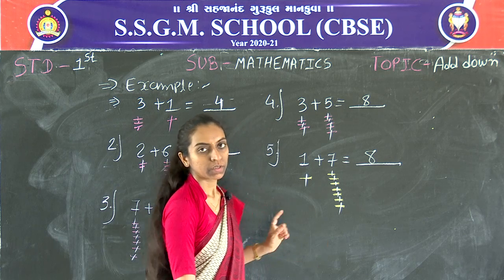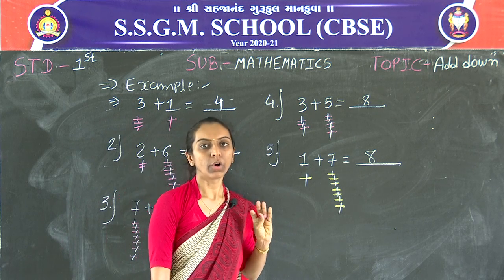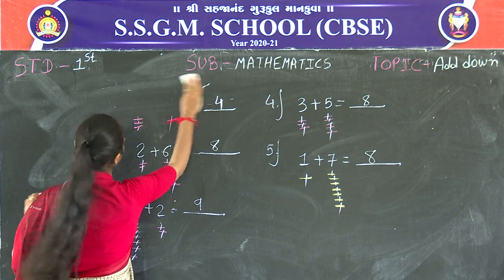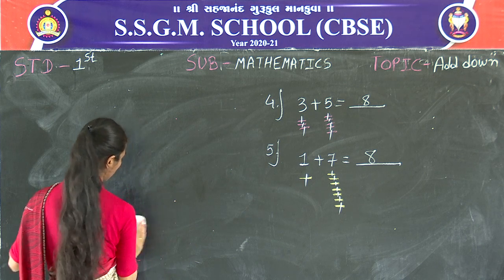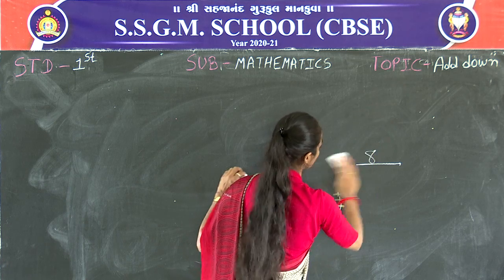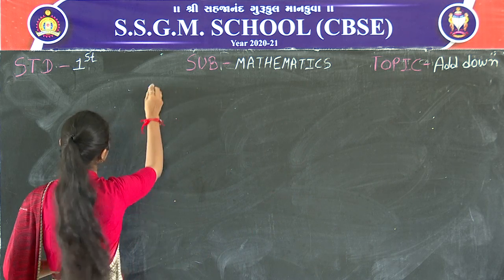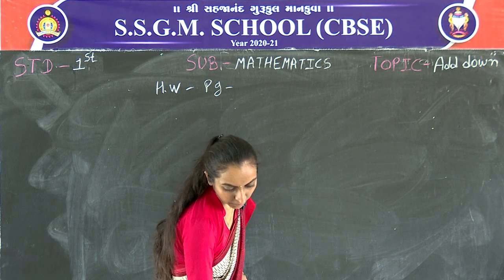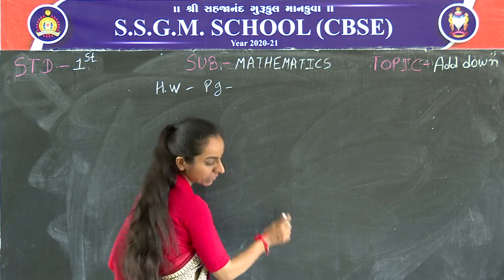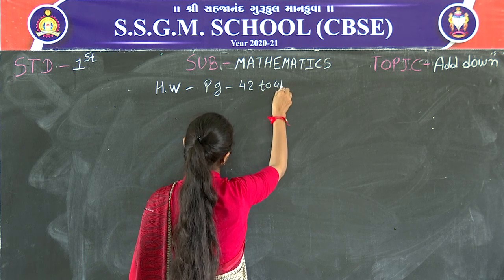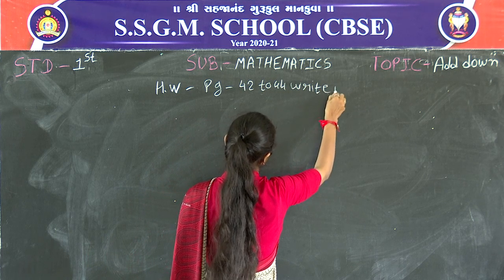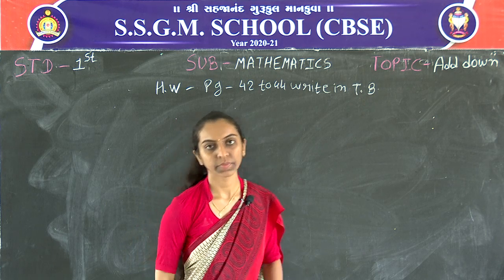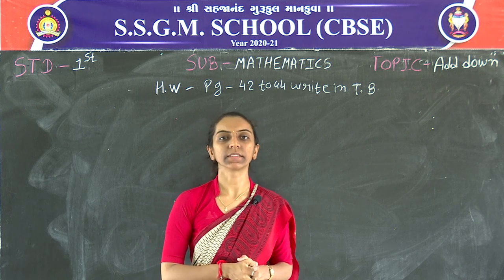If you have any questions, write in the comment box. Now write the homework — do textbook numbers 42 to 44. Thank you. Jai Swaminarayan — please like, share, and subscribe to our YouTube channel.